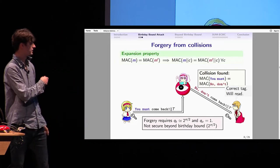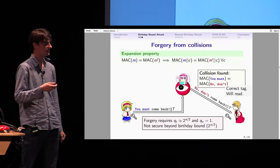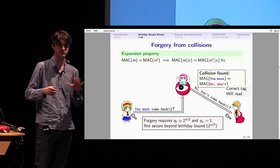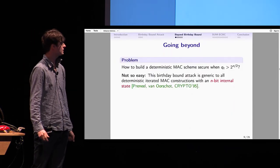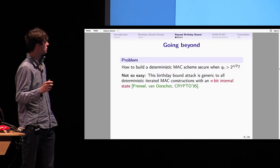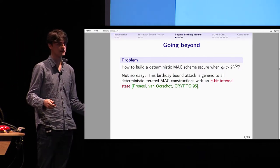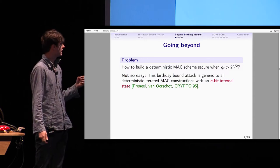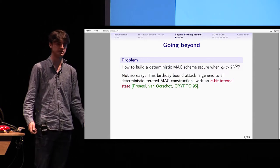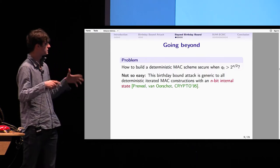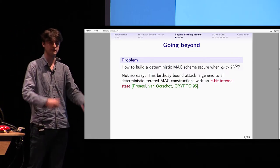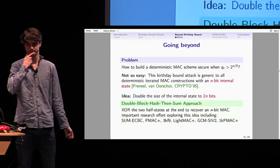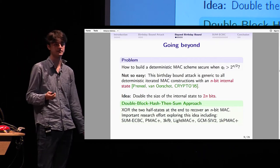This forgery requires around 2^(n/2) tagging queries and only one verification query. We say, in that case, that the scheme is not secure beyond the birthday bound, 2^(n/2) being the birthday bound. A natural question is: how can we build this kind of deterministic MAC that is secure even when we give more than 2^(n/2) queries? That's not easy, because as Preneel and Van showed in 1995, this kind of birthday bound attacks are generic to MAC constructions with an n-bit internal state.